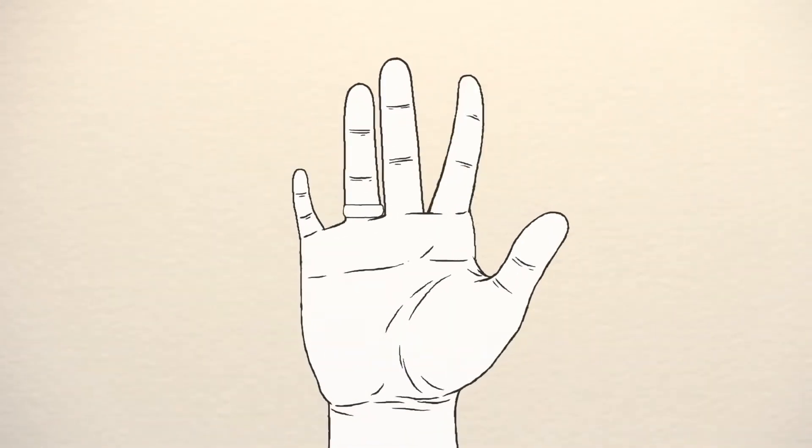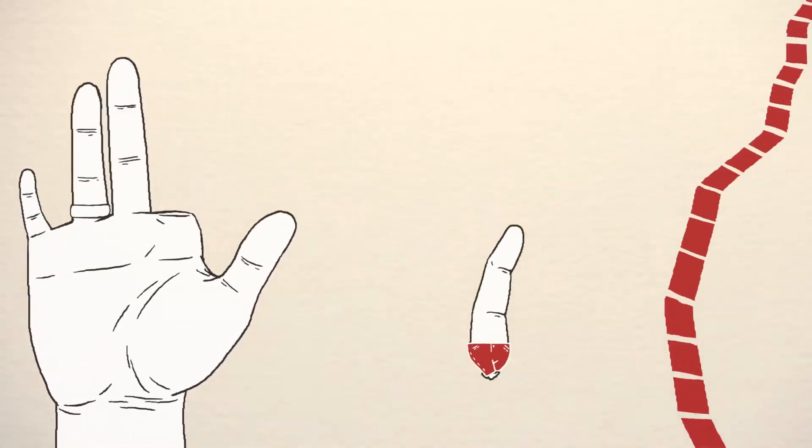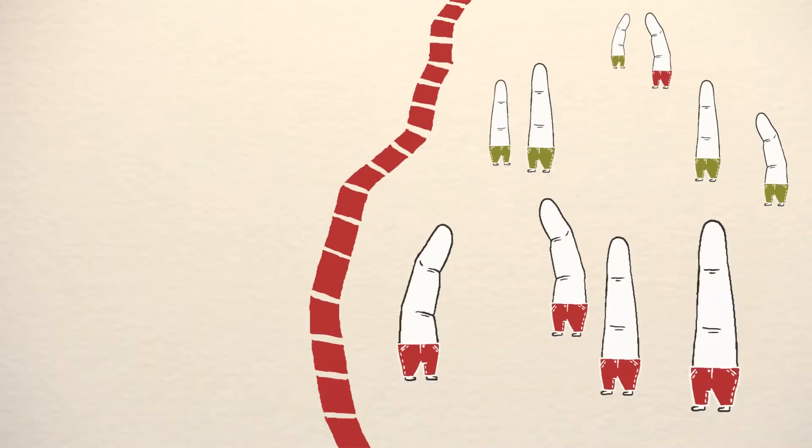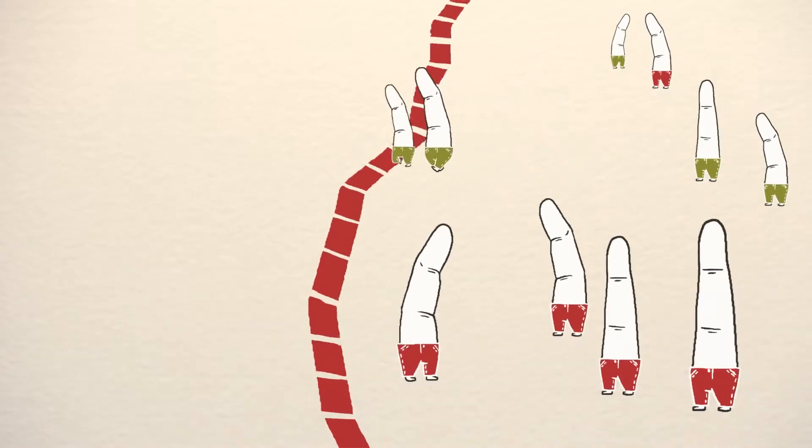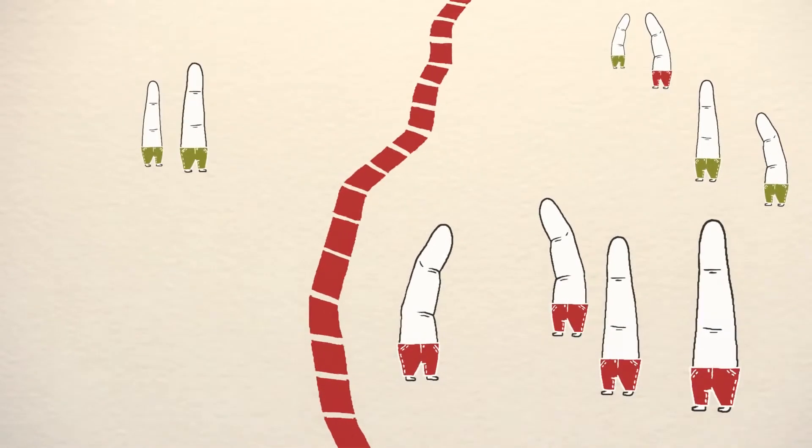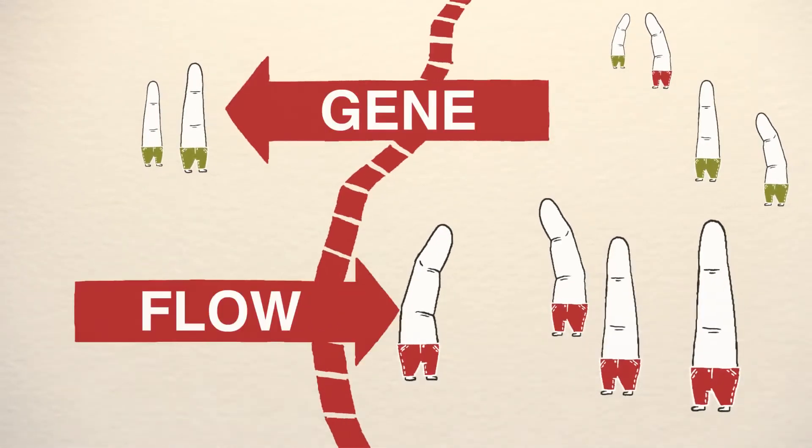The pointer finger should remind you of movement. If new individuals flow into an area or immigrate, the frequency will change. If individuals flow out of an area or emigrate, then the frequency will change. In science, we refer to this movement as gene flow.